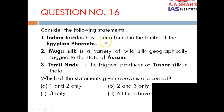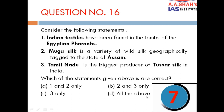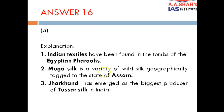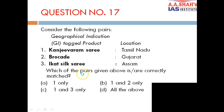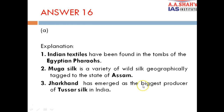Question 16: Consider the following statements. 1. Indian textiles have been found in the tombs of Egyptian pharaohs. 2. Muga silk is a variety of wild silk geographically tagged to the state of Assam. 3. Tamil Nadu is the biggest producer of Tussar silk in India. The correct answer is A — one and two only. Statements 1 and 2 are correct. However, Tamil Nadu is not the biggest producer of Tussar silk — presently Jharkhand has emerged as the biggest producer of Tussar silk in India.